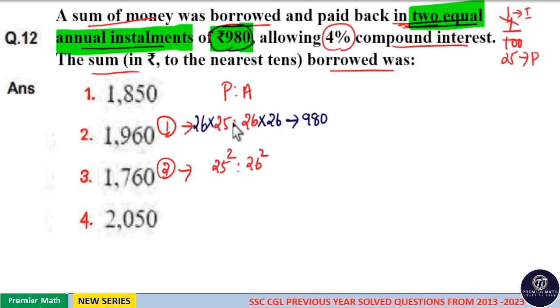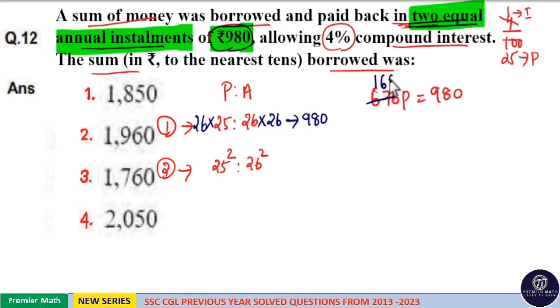Now we need to find out what is 1 part. Here 26 square part is 980 means 676 part is equal to 980. Now if I divide it with 4. 4 goes 1 time in 6 remaining 2. 4 goes 6 times in 24 remaining 3. 4 goes 9 times in 36. Same way here. So 169 part is equal to 245.